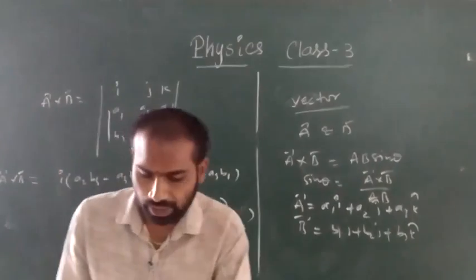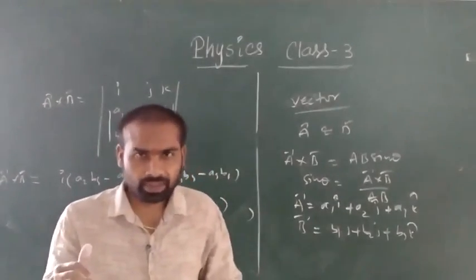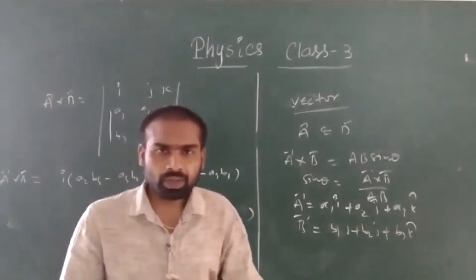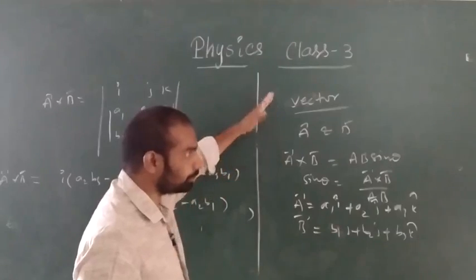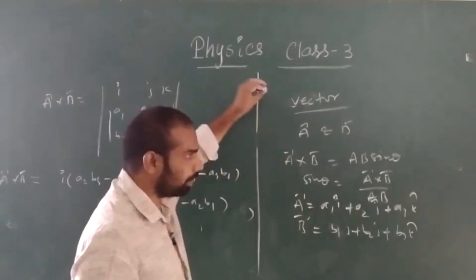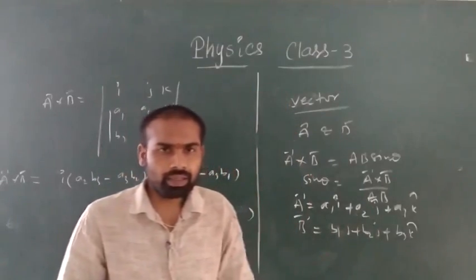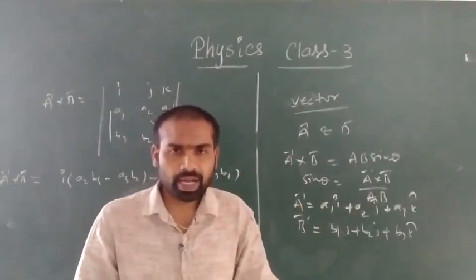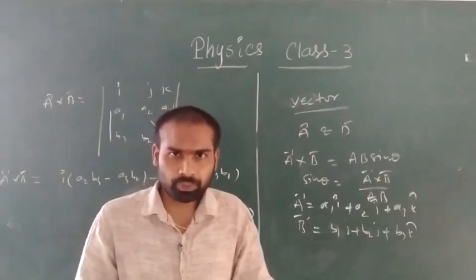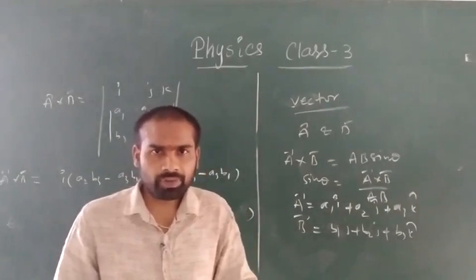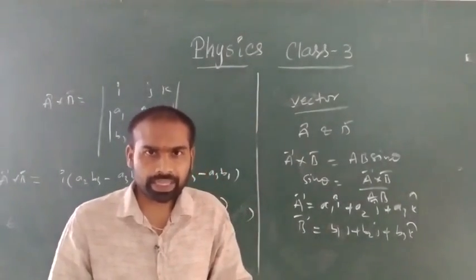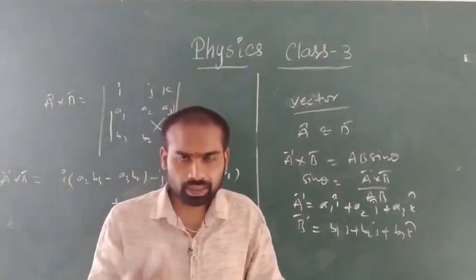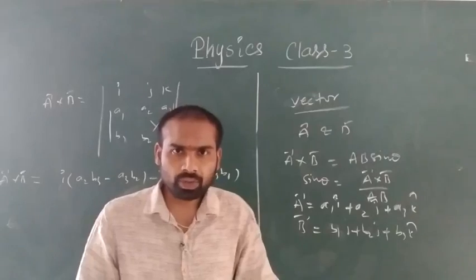Today we learned about scalar quantity, vector quantity, addition of vectors, subtraction of vectors, dot product (scalar product), and vector product, along with their formulas. Write down all these definitions and formulas in your notes and send them to me through WhatsApp. In upcoming classes, we will see scalar fields, vector fields, the del operator, divergence of a vector, and curl of a vector. Thank you all.